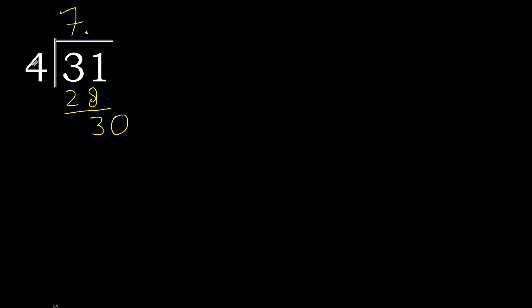4 multiplied by 8 is 32, is greater. Therefore multiplied by 7: 28. 30 minus 28 is 2.